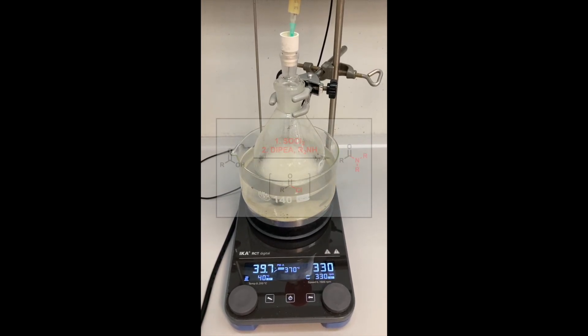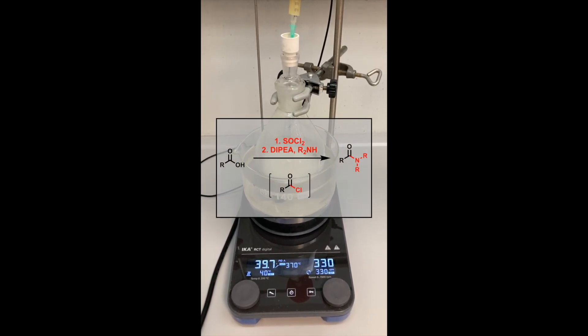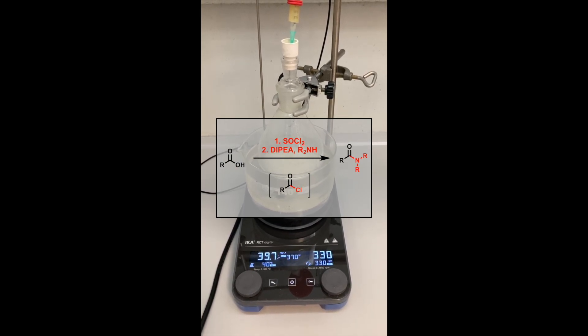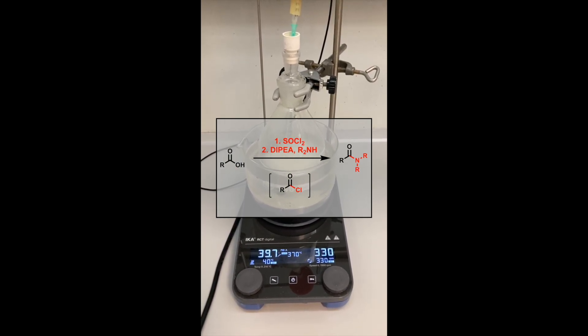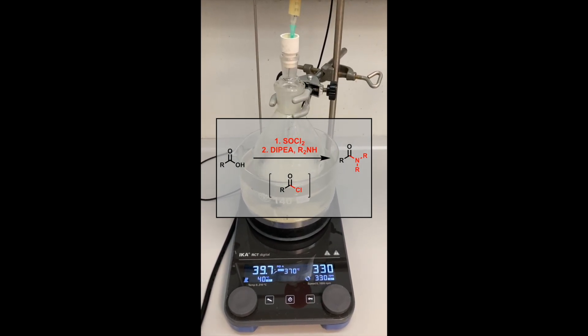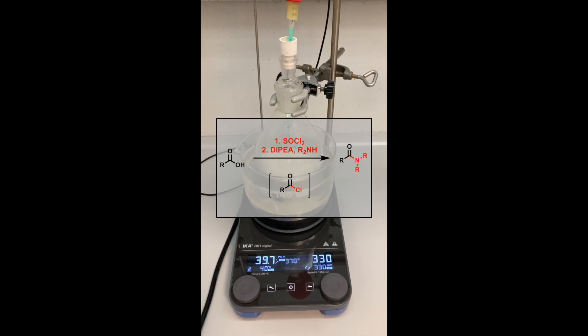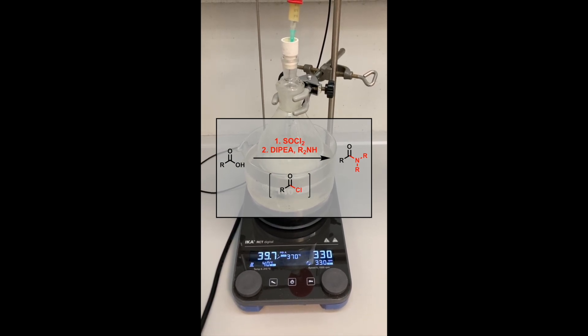I set up an amidation reaction. In this transformation, I wanted to prepare an amide from the corresponding carboxylic acid. I found a protocol in which the acid was first converted into the acid chloride by exposure to thionyl chloride. Then, addition of the amine and a base would deliver the desired amide.